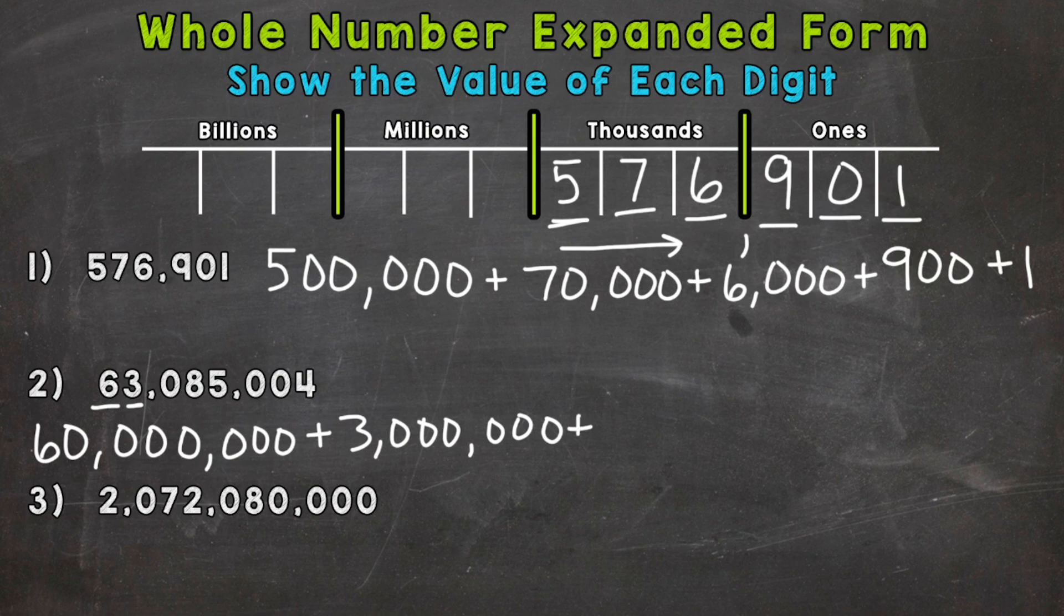Plus this three has a value of 3,000,000 because it's in the millions place. Plus we have a zero, so we can move to the eight here, which has a value of 80,000 because it's in the 10,000s place. Plus a five in the thousands place. So 5,000.